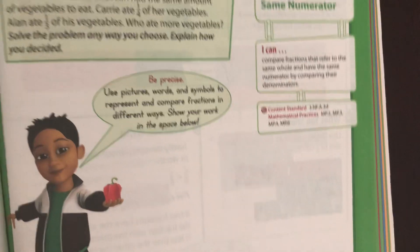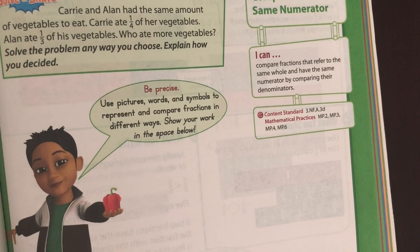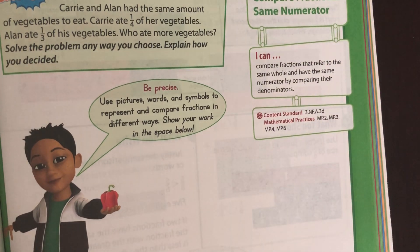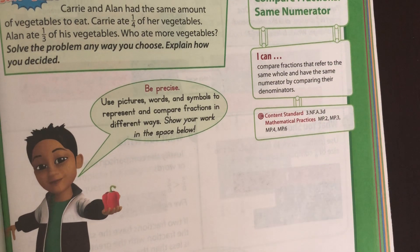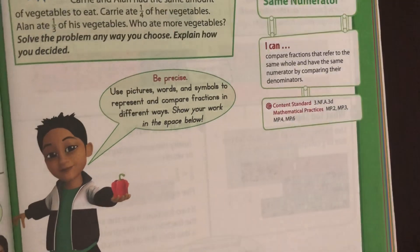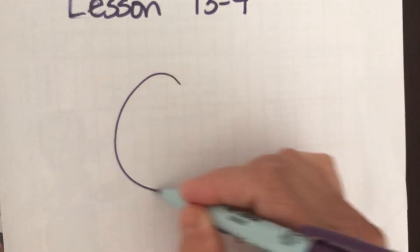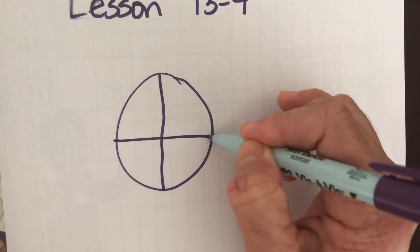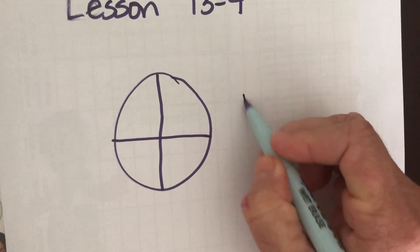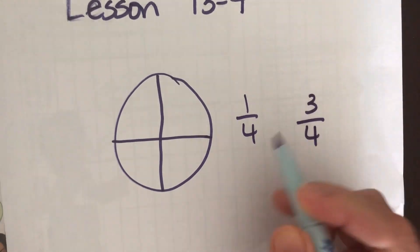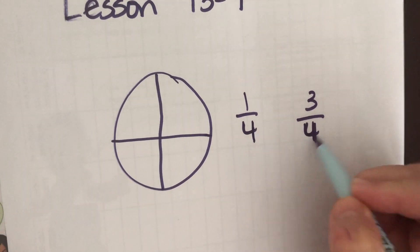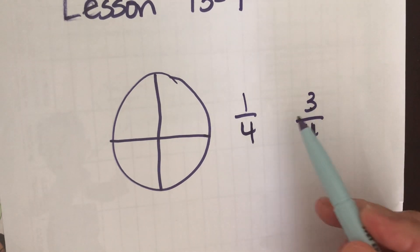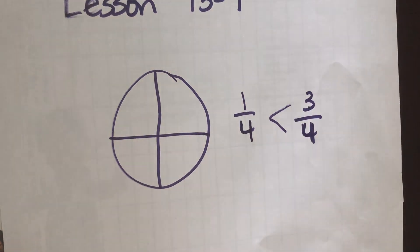Today's lesson is about comparing fractions with the same numerator. Before spring break, we did the same denominator. That was easy because when you take a pizza and divide it into four equal parts, it's very easy to compare one-fourth to three-fourths. Because your denominator is the same, so you know all the pieces are the same size. Obviously, if you have three of those pieces, you have more than if you have one of those pieces.